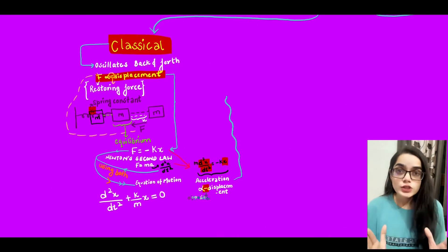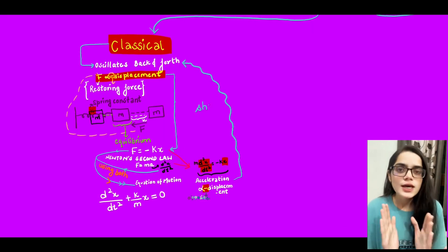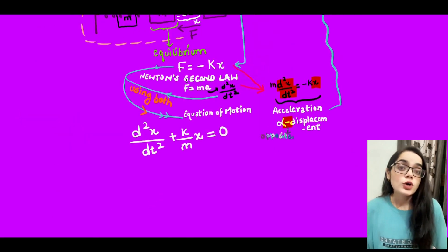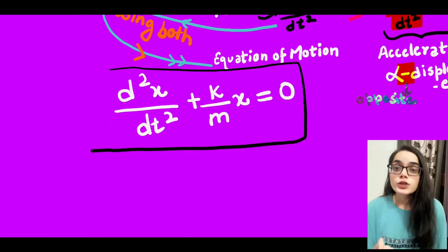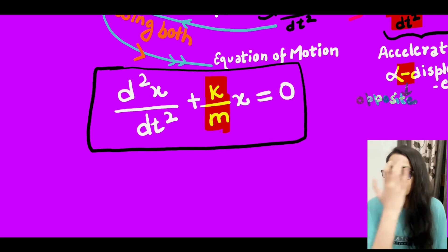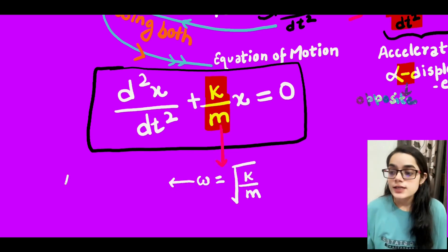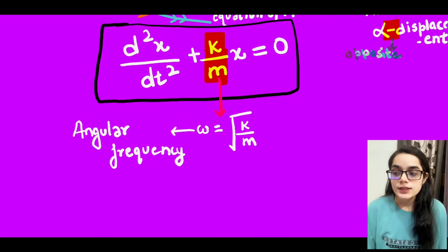We are making our equation of motion. This is a second-order differential equation, and we also know that the angular frequency ω equals √(k/m). From the equation of motion, acceleration is directly proportional to the negative of the displacement.